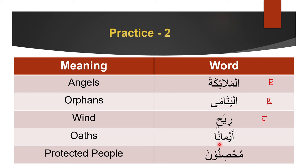Aymān: it has tanwīn so it's singular or broken plural. The meaning is 'oaths' — a broken plural of non-human things, therefore it is definitely singular feminine.